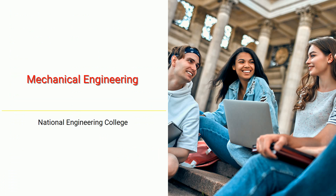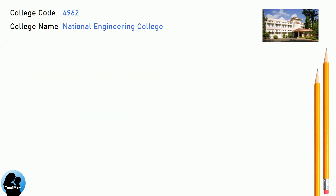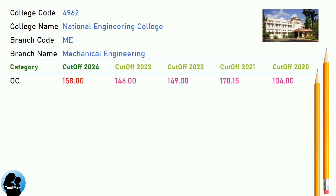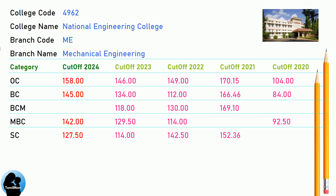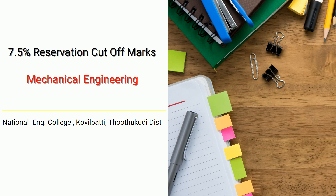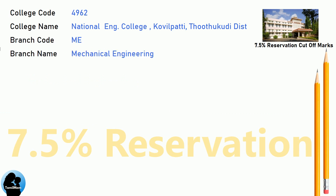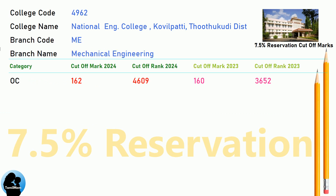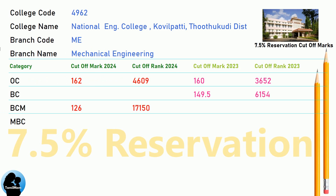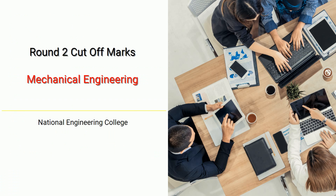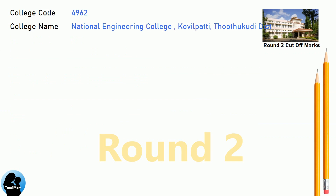DNA cut-off for National Engineering College in Mechanical Engineering. DNEA 7.5 Reservation cut-off for National Engineering College in Mechanical Engineering. DNEA Round 2 cut-off for National Engineering College in Mechanical Engineering.